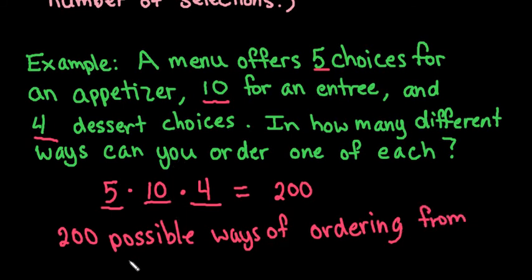So with this, the fundamental counting principle, it is surprising how quickly it adds up, but it's very simple. All you have to do is multiply the total number of choices together.